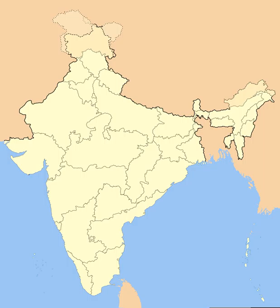A few, including Mysore, Hyderabad, Bhopal, and Balaspur, became separate provinces. The new Constitution of India, which came into force on 26 January 1950, made India a sovereign democratic republic. The new republic was also declared to be a 'union of states'. The constitution of 1950 distinguished between three main types of states.